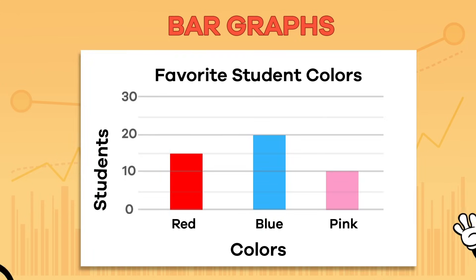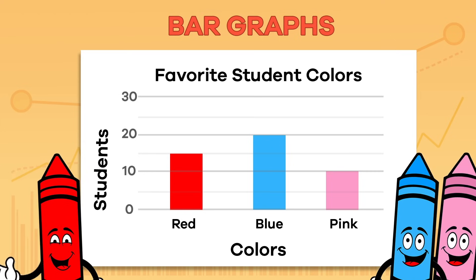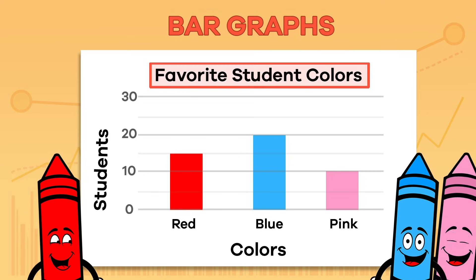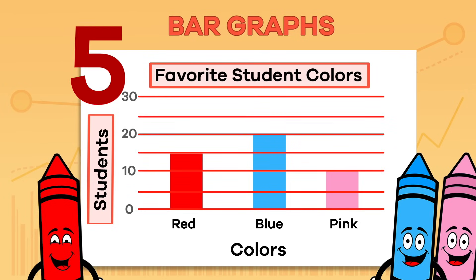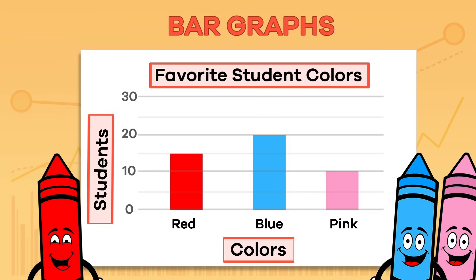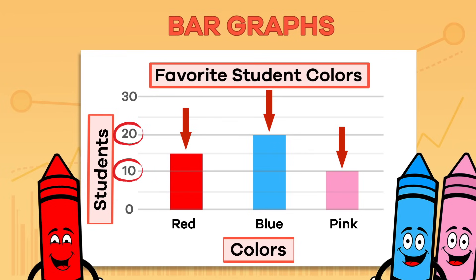This graph is about students' favorite colors instead of field trips. The bar graph has a title on the top: Favorite Student Colors. On the left side of the graph, there are numbers as well as the word students. Each line on the graph represents 5 students. At the bottom of the graph is the word colors, and each bar represents a different color. The top of each bar touches a line that represents the number of students that like that color. So, 15 students like red, 20 students like blue, and 10 students like pink.